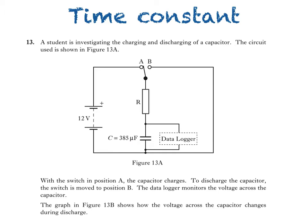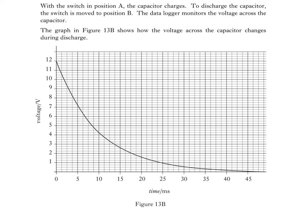To discharge the capacitor, the switch is moved to position B, like so. The data logger monitors the voltage across the capacitor. The graph in figure 13B shows how the voltage across the capacitor changes during discharge. And this is the graph here, showing the voltage across the capacitor decreasing from the supply voltage of 12 volts to zero in a time just over 45 seconds.